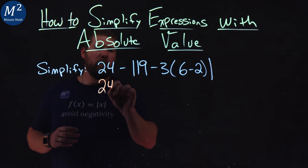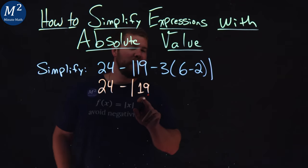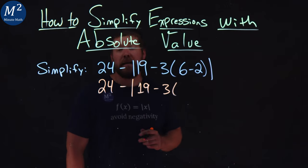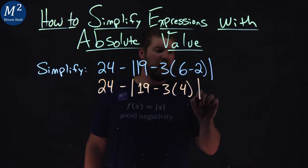So let's rewrite this. 24 minus absolute value of 19, I'll write the one like that so it's a little easier to see, minus 3 times (6 minus 2) in the parenthesis, which comes out to be 4. And we solve the absolute value at the end.